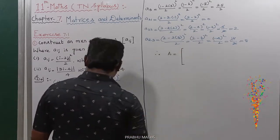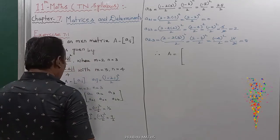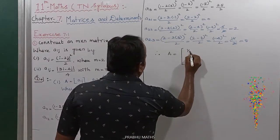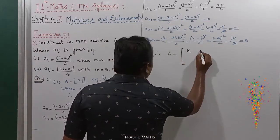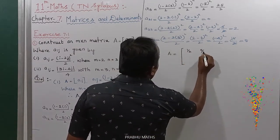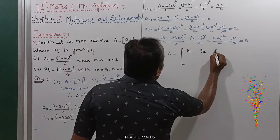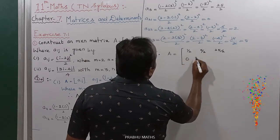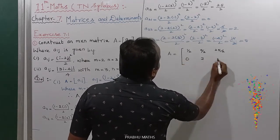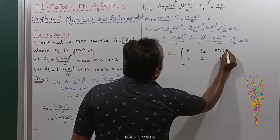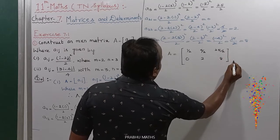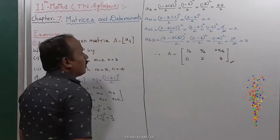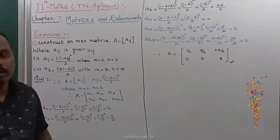Therefore, A equals the matrix: first row is 1/2, 9/2, 25/2; second row is 0, 2, 8. That is the first subdivision.